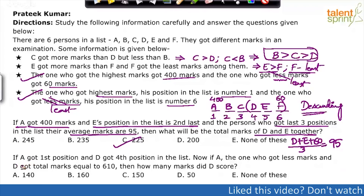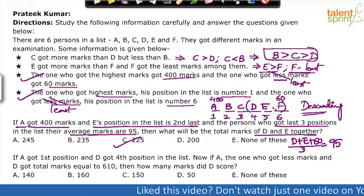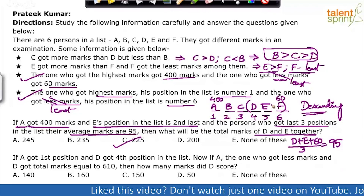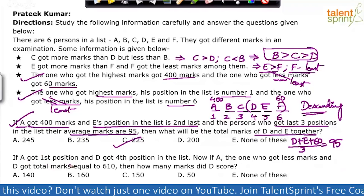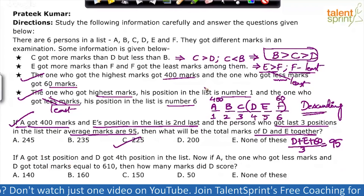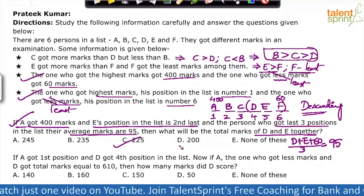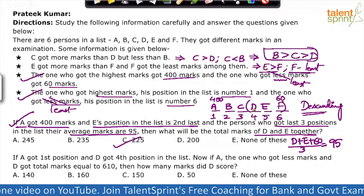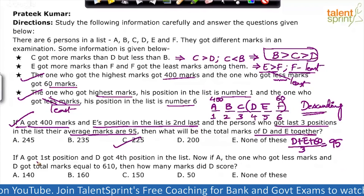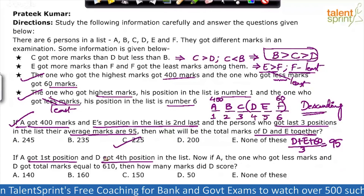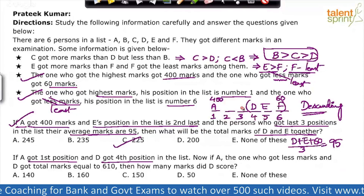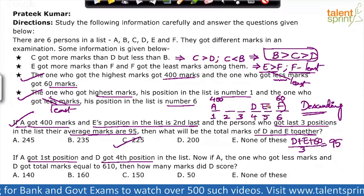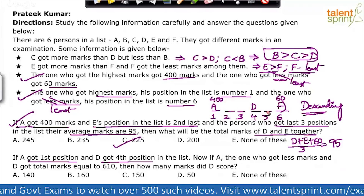For Question 2, don't assume the same sequence from Question 1. Question 2 says: if A got first position and D got fourth position. A in first position is fine, D in fourth position is fine. The moment you say A is first and D is fourth, everything else will again fall into the same order — there is no other possibility.